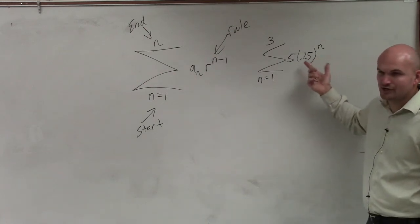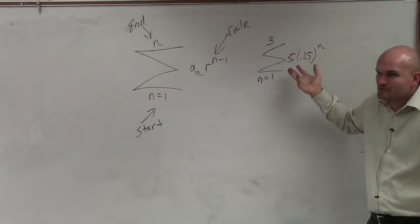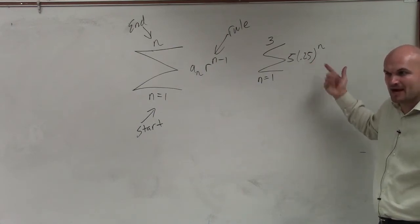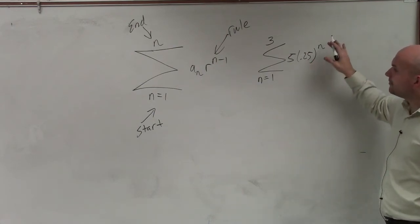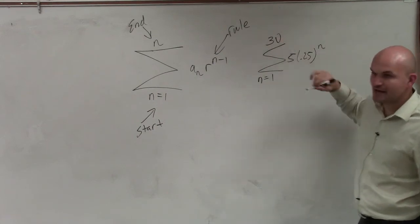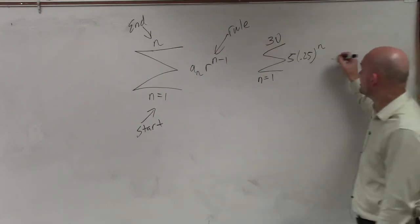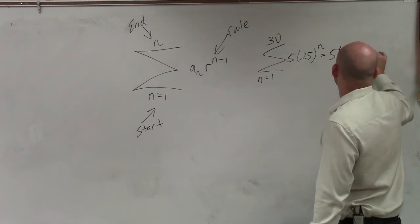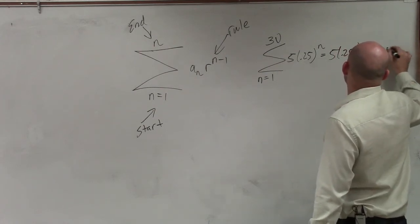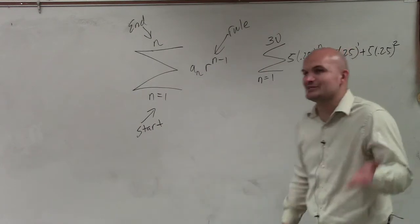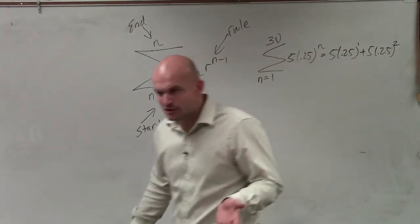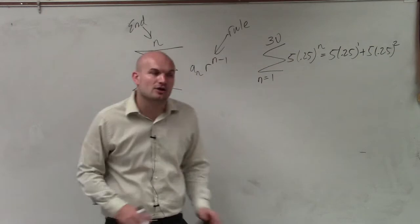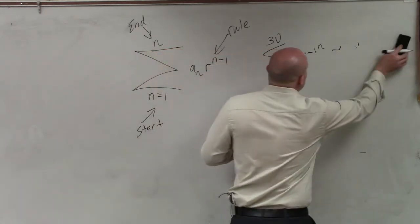Could you probably do this in your calculator for three values? It'd be pretty easy — you'd just plug in 1, 2, and 3 and be done with it. But what if I gave you 30 values? You're obviously not going to want to plug in 5 times 0.25¹ plus 5 times 0.25² all the way up to 30. So there is a rule I want you guys to write down that we are going to use for finite sequences.